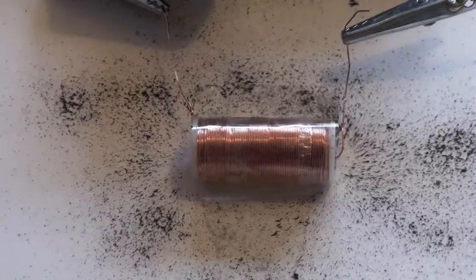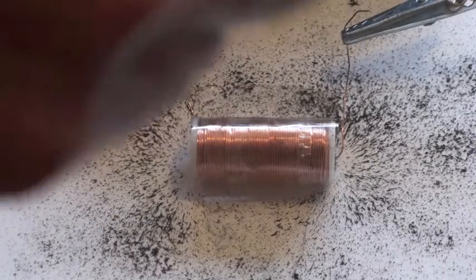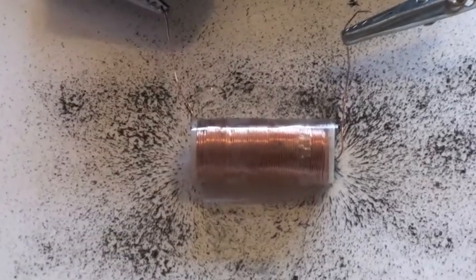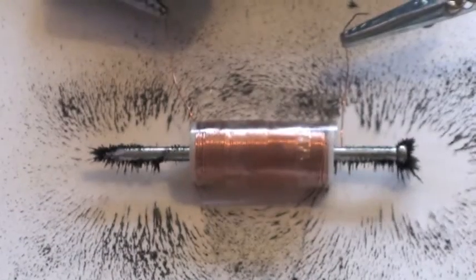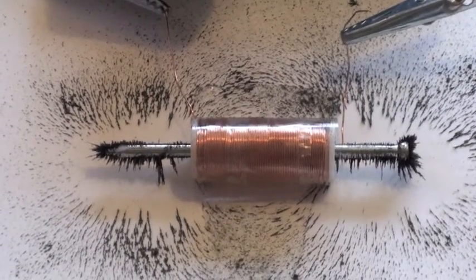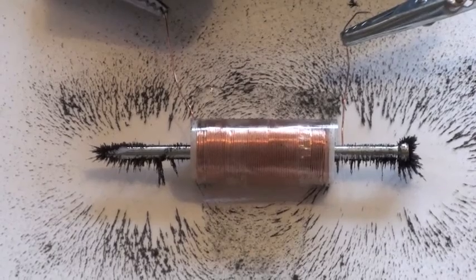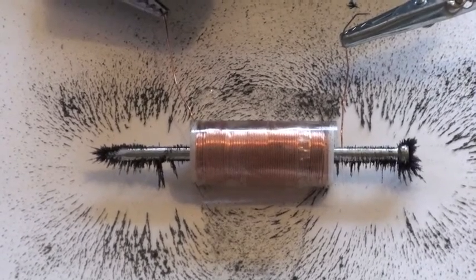We start again with the coil and current flowing through, scattering iron filings around, but then slide the nail inside the coil. Notice how much the magnetic field is increased, not only near the ends of the nail but around the sides of the coil as well.